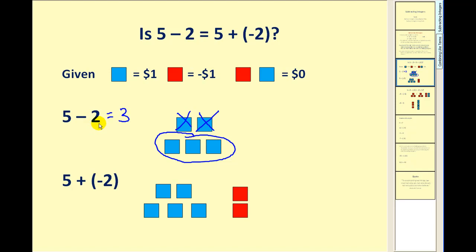But instead of subtracting positive 2, what if we add negative 2? Well here's our model for positive 5. Here's our model for negative 2. Now adding is like combining, so if we combine all of these together,